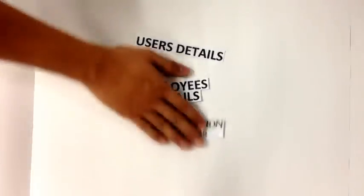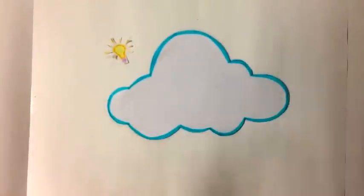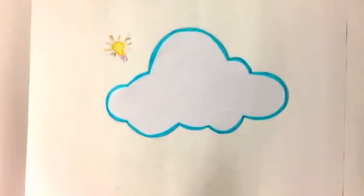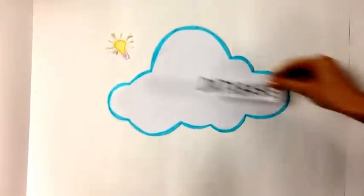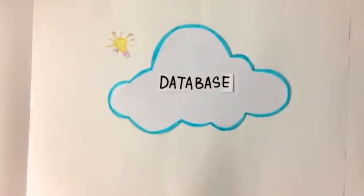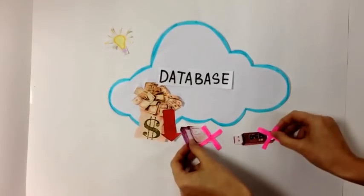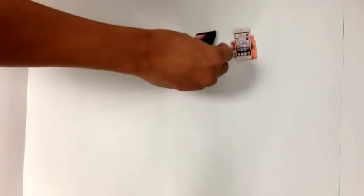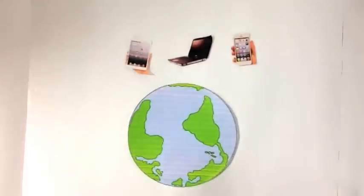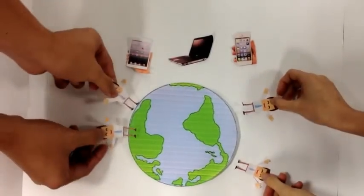We have something called the Online Cloud Computing System where you can pay another party to store all your databases in a remote computer. This could lower the cost of hardware used to store the data. As long as you have a smartphone, a laptop, a tablet, or any device with internet accessibility, you can view your database in any corner of the world.